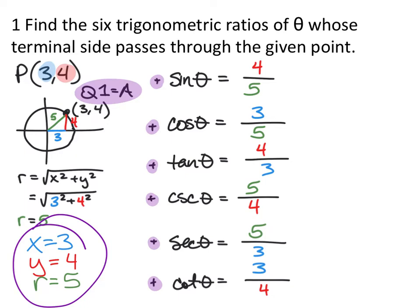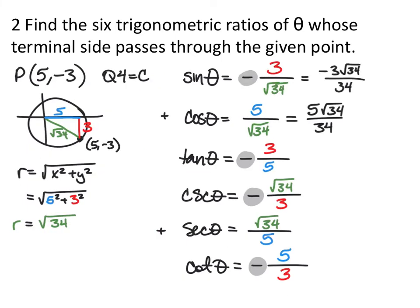When the coordinate point is in quadrant 4, that's the C in 'All Star Trig Class,' meaning cosine and secant are positive but everything else is negative. We still find r using the Pythagorean theorem — for example, r = √34 — then use x, y, and r to compute all six trig measures, making sure to assign negatives to everything except cosine and secant since we're in quadrant 4.